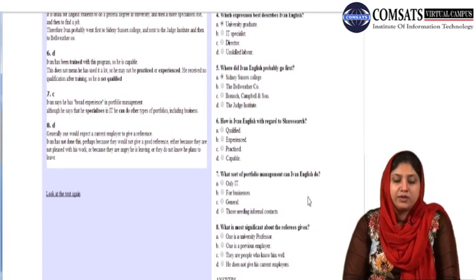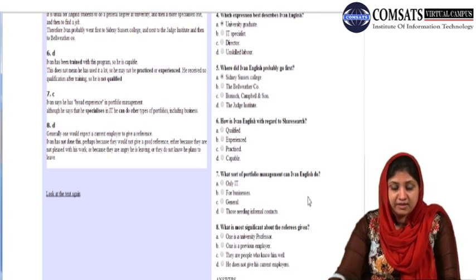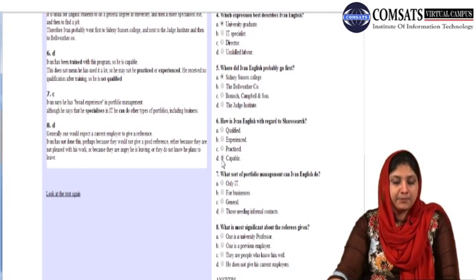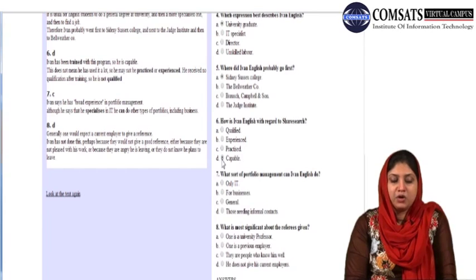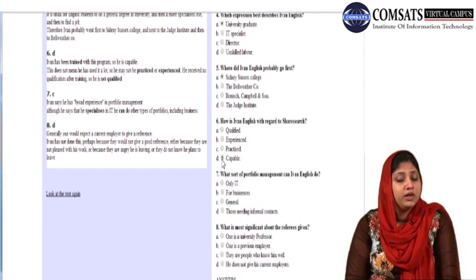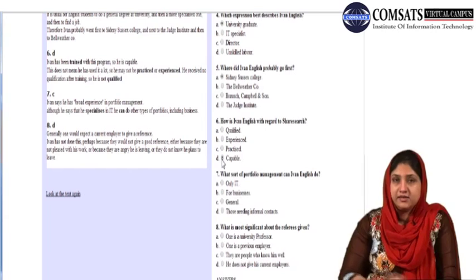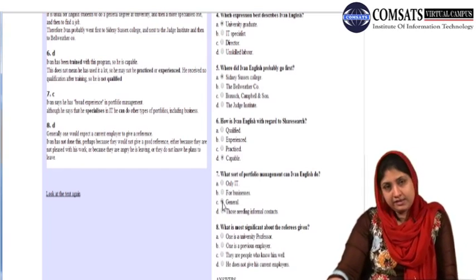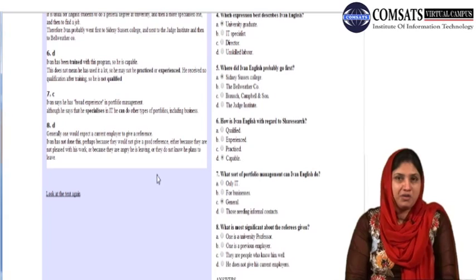Where did Ivan English probably go first? It is usual for English students to do a general degree at university and then a more specialized one and then to find a job. Ivan probably went first to Sydney Sussex College and next to the Judge Institute and then to Bellwether Company. How is Ivan English with regard to Sharesarch? Ivan has been trained with this program, so he is capable. This does not mean he has used it a lot, so he may not be practiced or experienced.